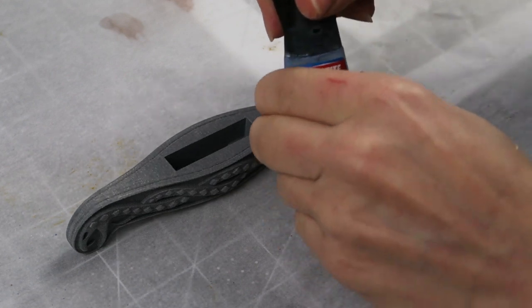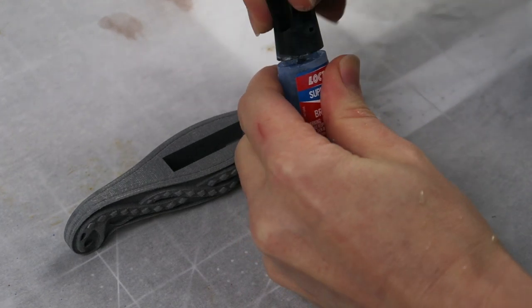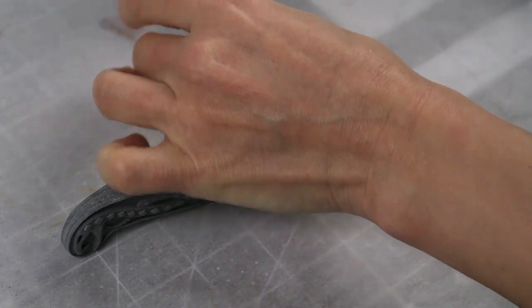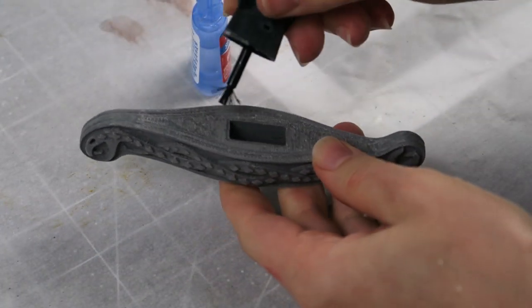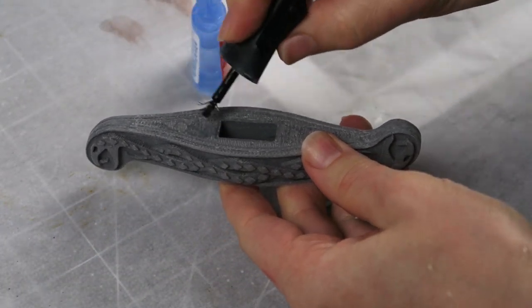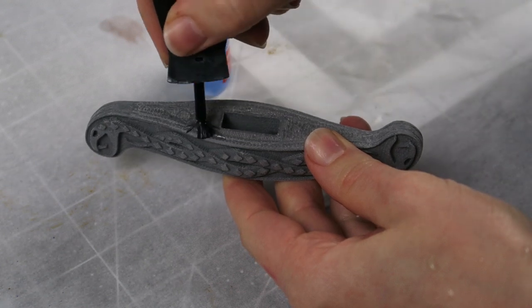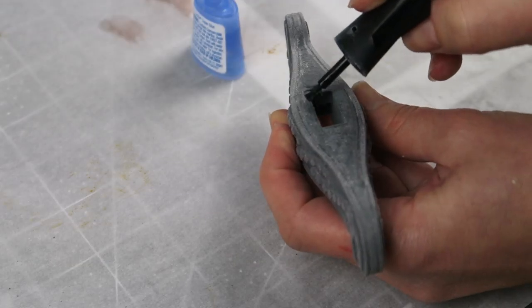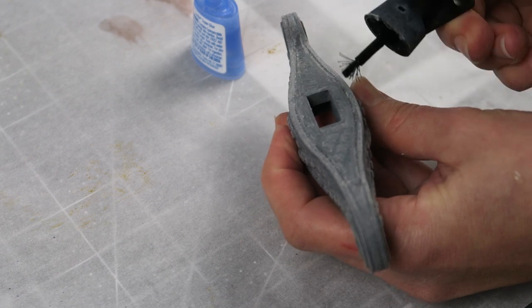The cross guard was still somewhat uneven on that bottom portion where the supports were so I just used a bit of brushable super glue to fill in the small divots. I allowed that to dry and then was able to sand that nice and smooth. Because these were such small imperfections this was the easiest way to take care of that.